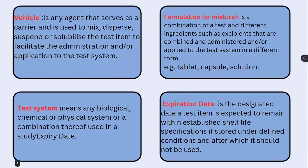'Vehicle' is any agent that serves as a carrier, or is used to mix, disperse, suspend, or solubilize the test item to facilitate administration. 'Formulation or mixture' is a combination of the test item and different ingredients such as excipients that are combined and administered to the test system in a specific form — for example, tablet, capsule, or solution.